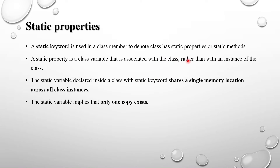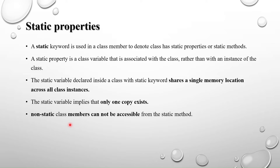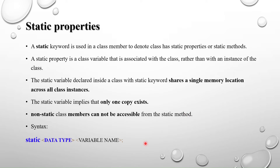The static keyword implies that only one copy exists across all instances. When a class has multiple instances, each normally has its own copy of variables, but with static, only one copy exists. Also, non-static class members — called automatic members — cannot be accessed from a static method. In a class, members are either static or automatic.